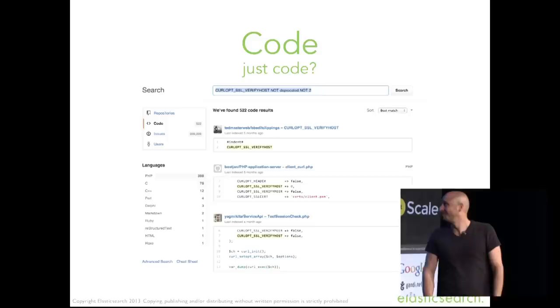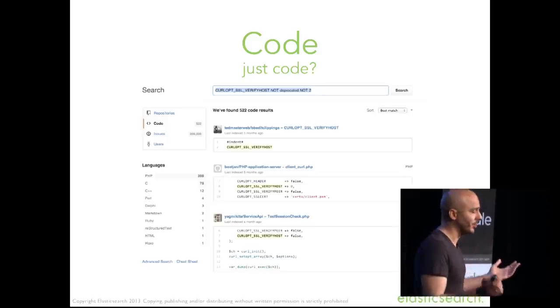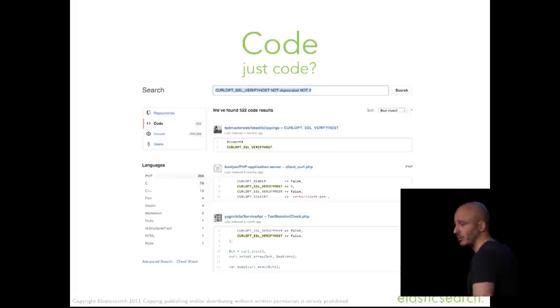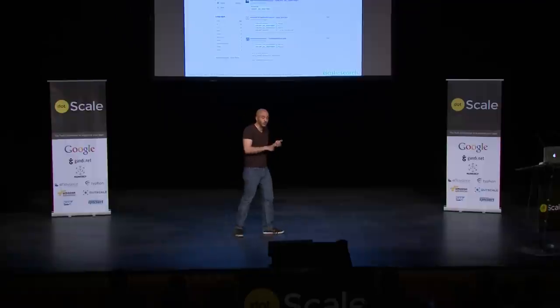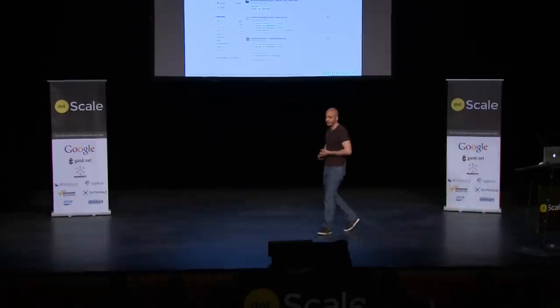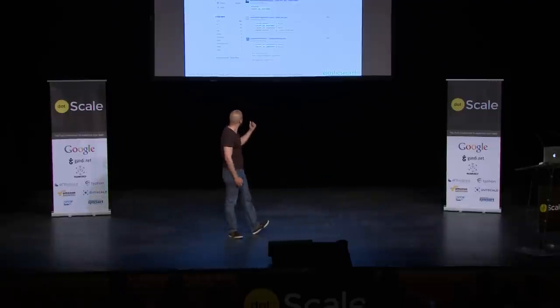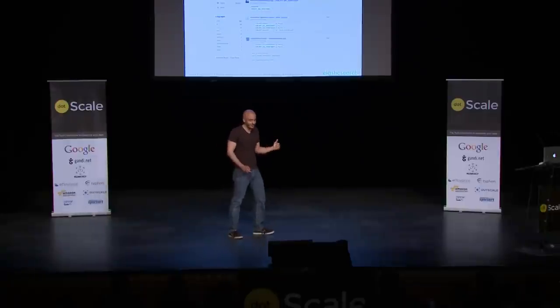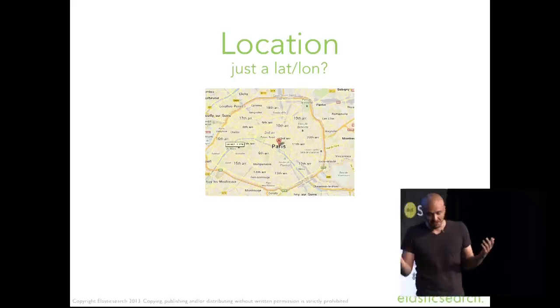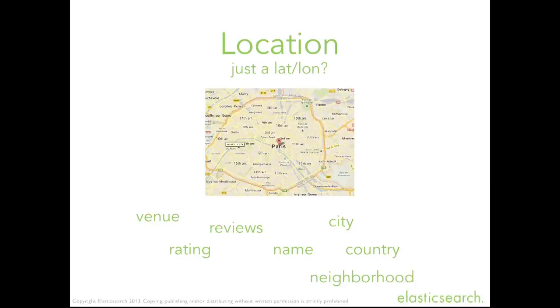GitHub uses Elasticsearch for search across a lot of data, including code. Is code really just code? Code is associated with a language like PHP — there's tons of information associated with it, the history, who's committing what to where. When you do a search like this, you can figure out, for example, who doesn't do verify-host when using curl. And Foursquare uses Elasticsearch — is a check-in just a latitude/longitude? It also has venue, reviews, name, city, country, and neighborhood.